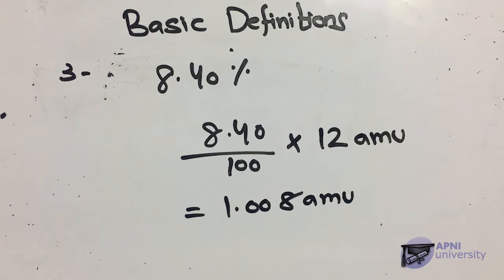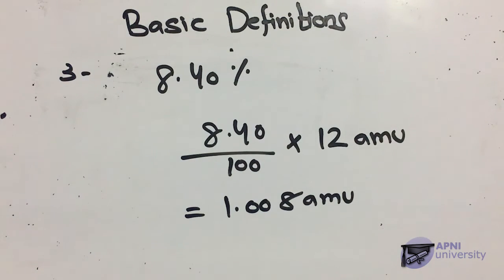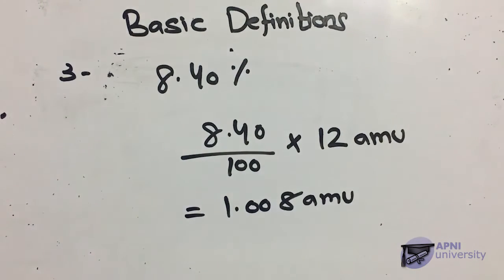Similarly, relative atomic masses of oxygen, sodium, and aluminium are 15.9994 amu, 22.9898 amu, and 26.9815 amu respectively. From the table of relative atomic masses: hydrogen is 1.008 amu, nitrogen is 14.0067 amu, oxygen is 15.9994 amu, and sodium is 22.9898 amu.